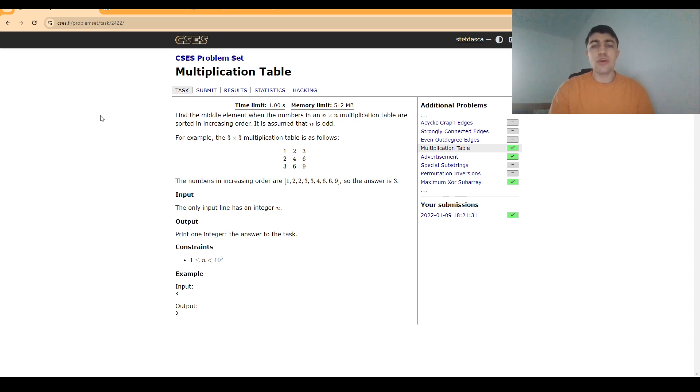So in order to conclude, in order to solve this problem you need to use the fact that the grid is sorted on each line and that if we were to want to find the number of values smaller or equal than a certain value, this function is increasing which allows us to do a binary search over the answer and use the property that each line has.